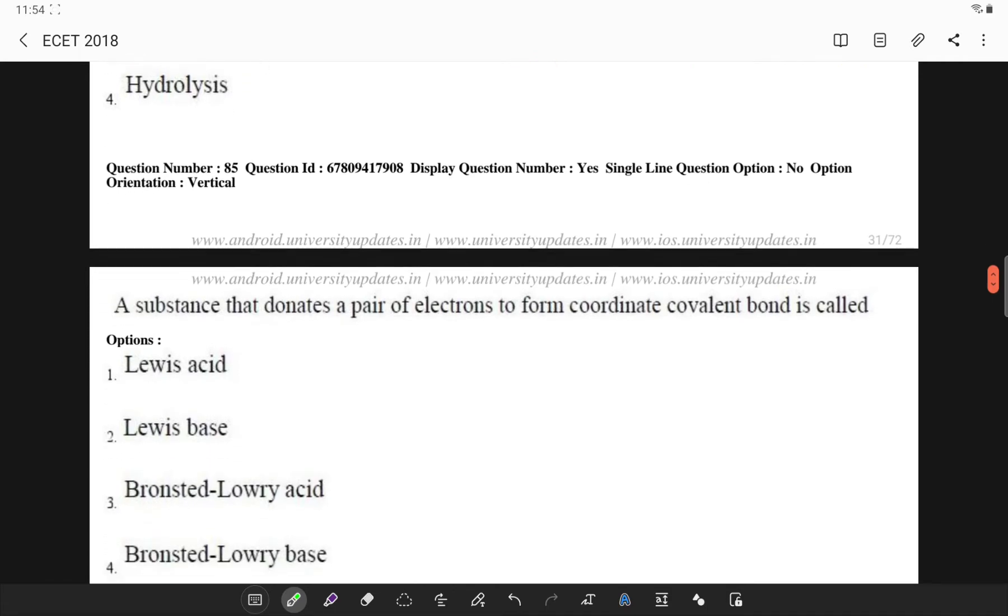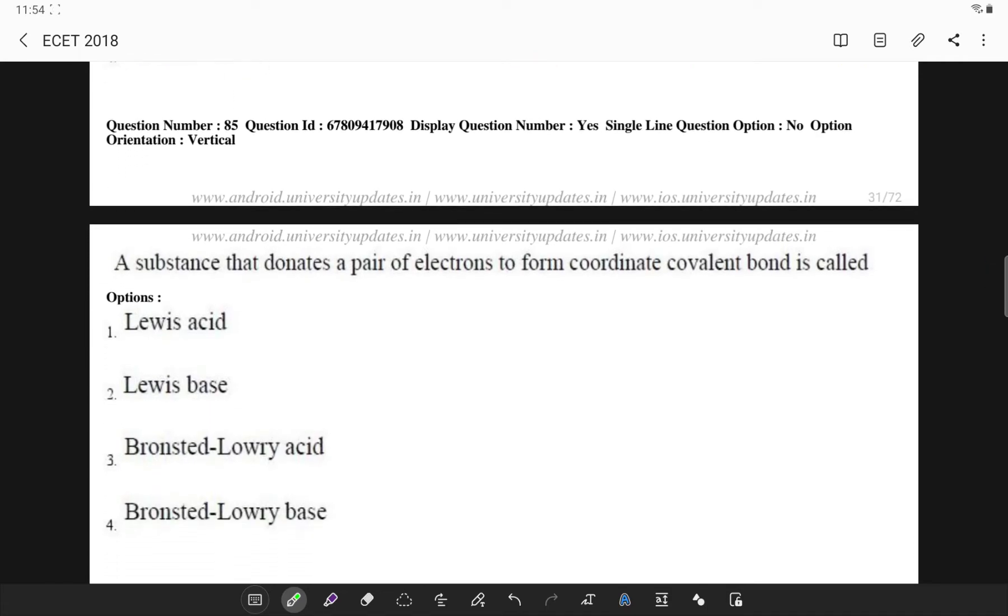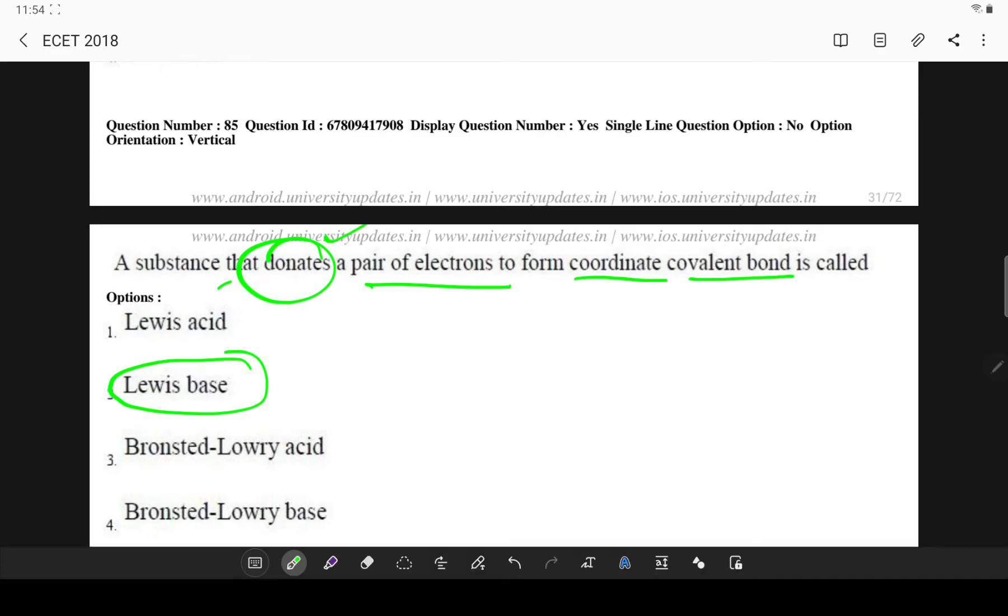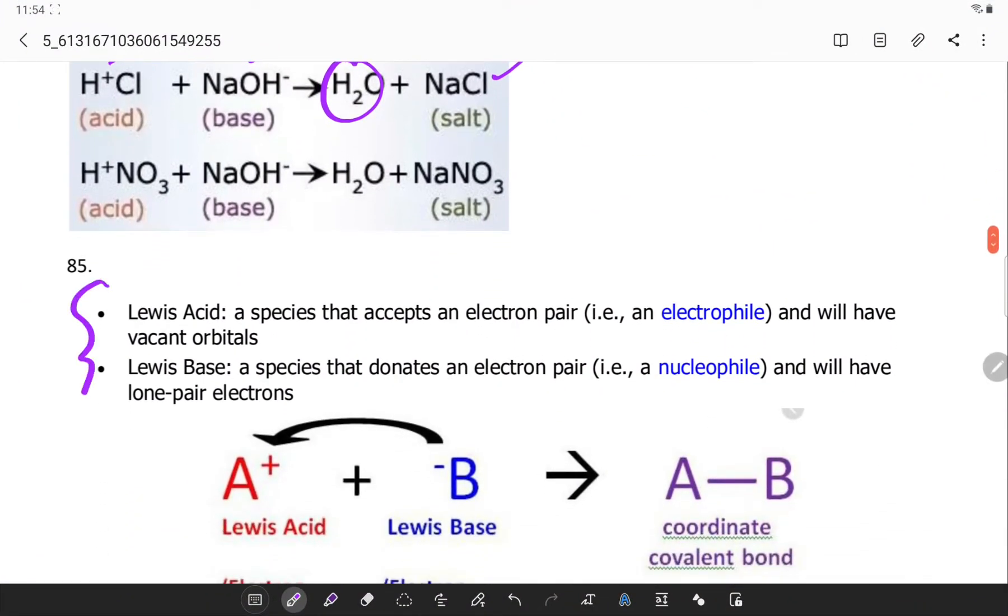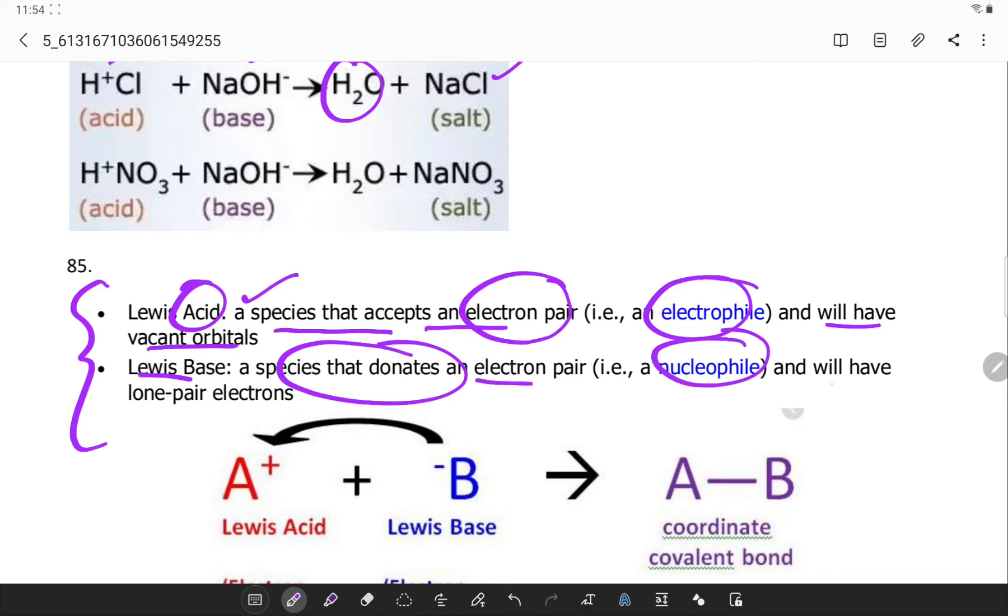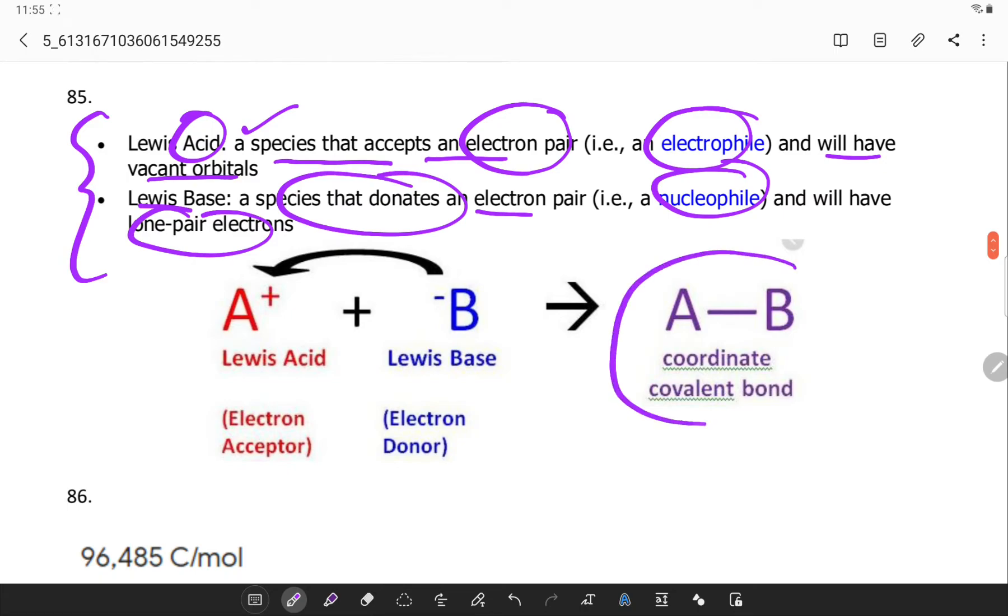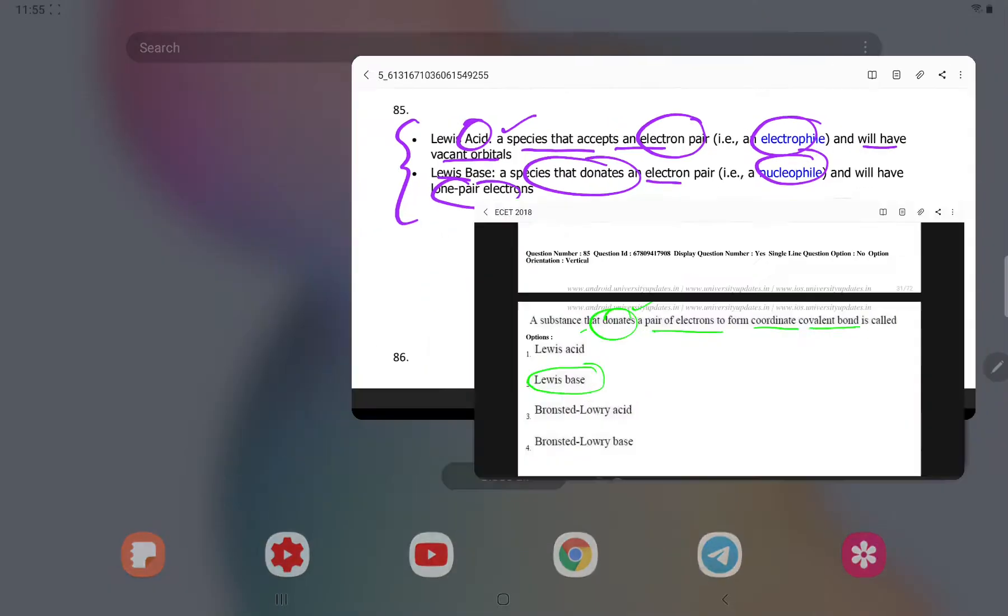A substance that donates pair of electrons to form coordinate covalent bond is Lewis base. If it is an acceptor it is Lewis acid. Both these topics are very important. What is a Lewis acid? It is a species that accepts electron pair or an electrophile and it will have vacant orbitals. Simply remember there is a coordinate covalent bond in this case. Acid will be accepting electron pair and base will be electron donor.